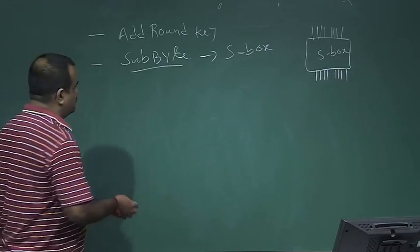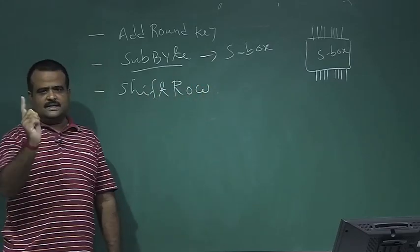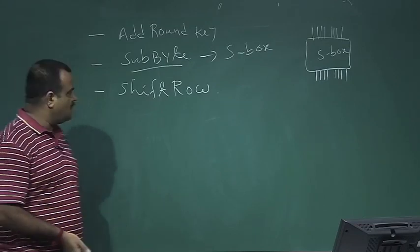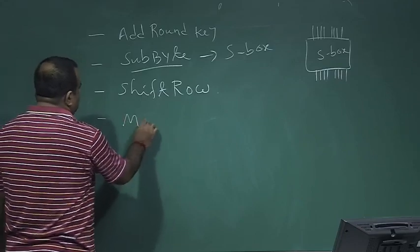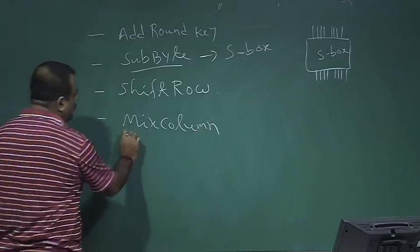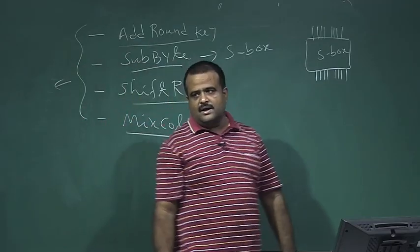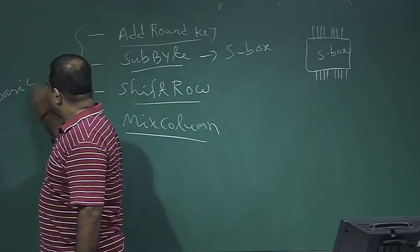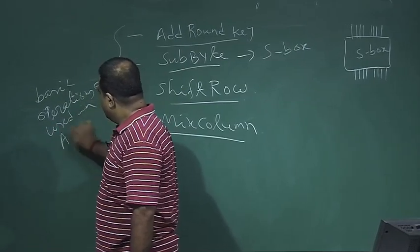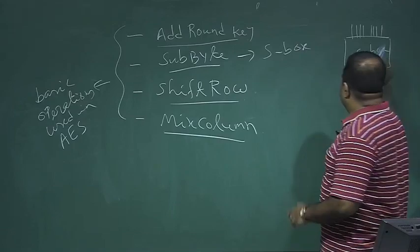In the Sub Byte operation, we take each byte of the state and apply the S-box. In the Shift Row operation, we shift the rows of the 4×4 state matrix. Mix Column is another operation we will also discuss. These are the basic operations used in designing AES, and we will study each in detail.